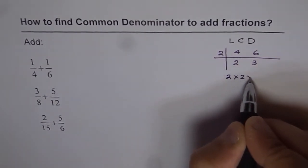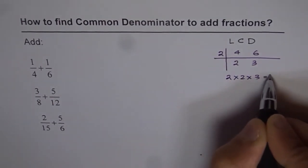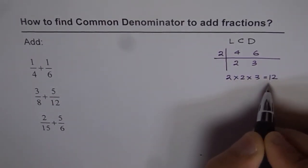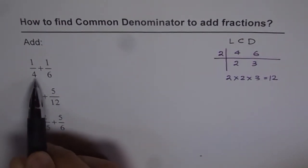Now if I multiply 2 times 2 times 3, what do I get? 2 times 2 is 4, and 4 times 3 is 12. So 12 is the least common denominator for this fraction.